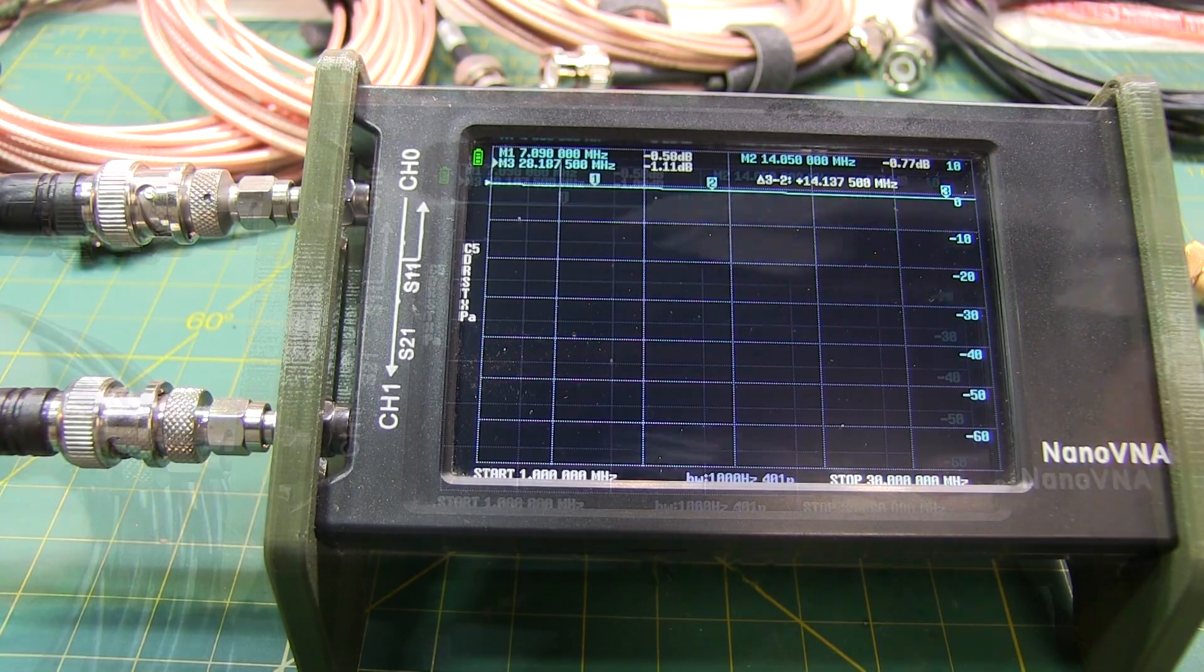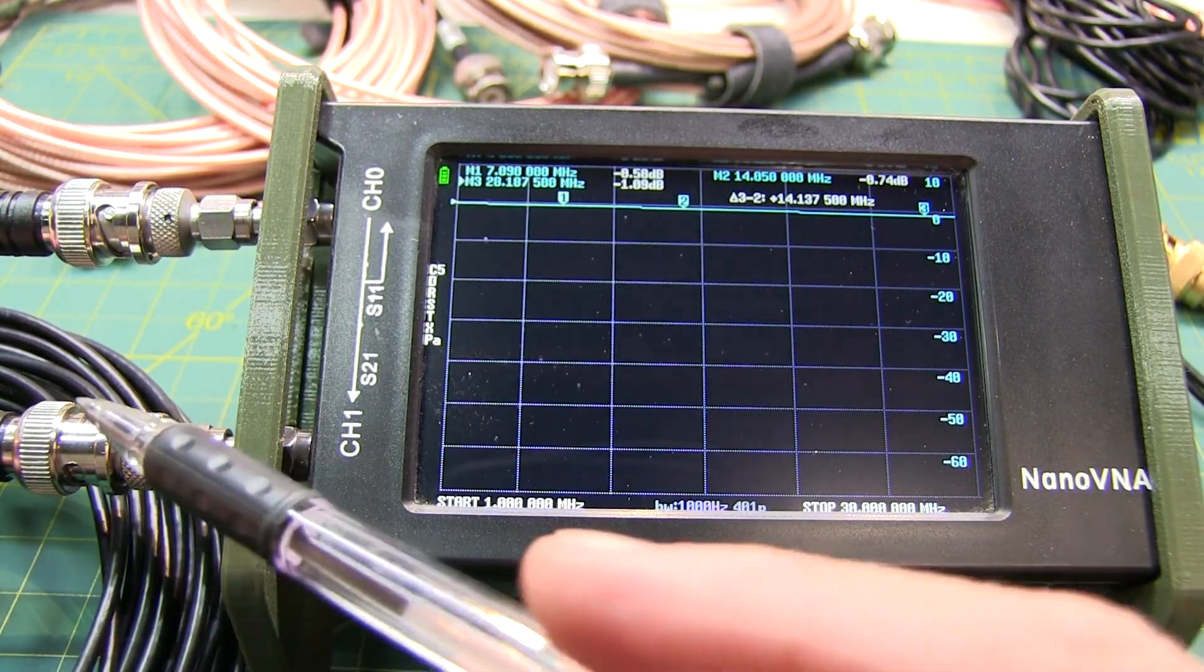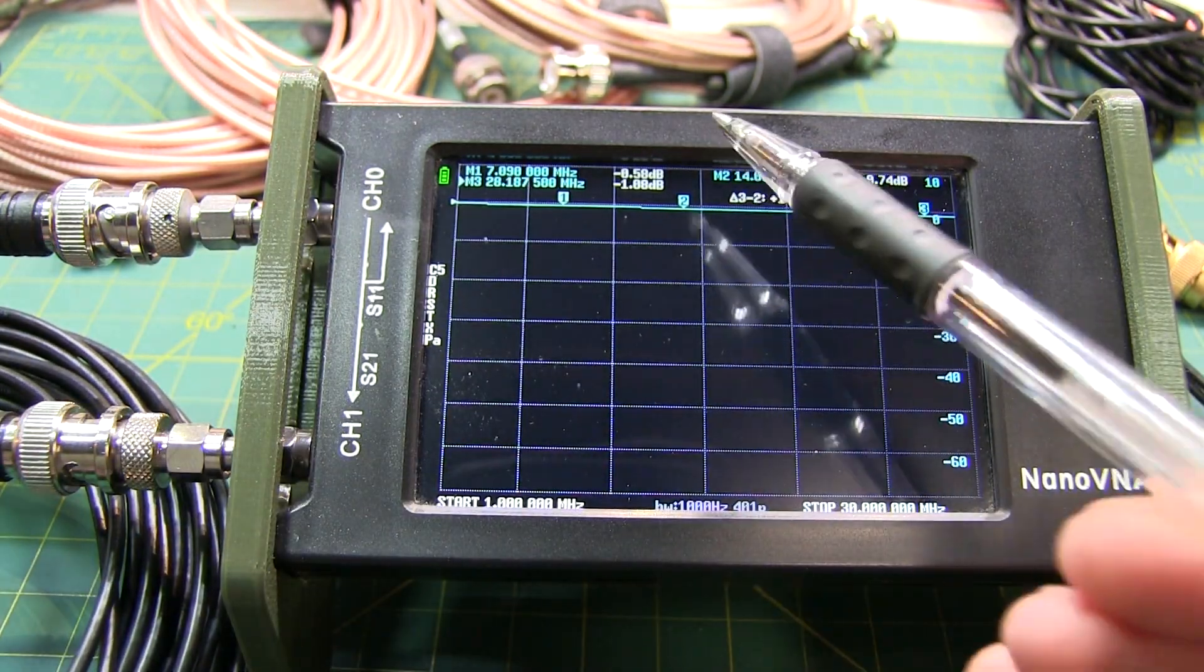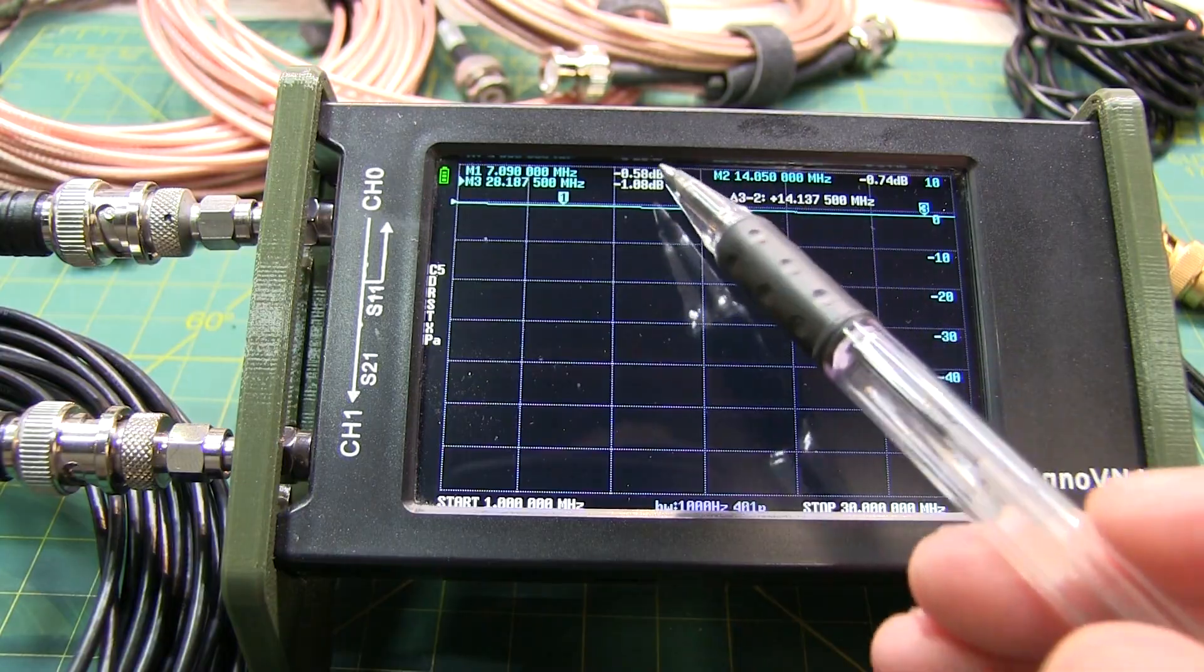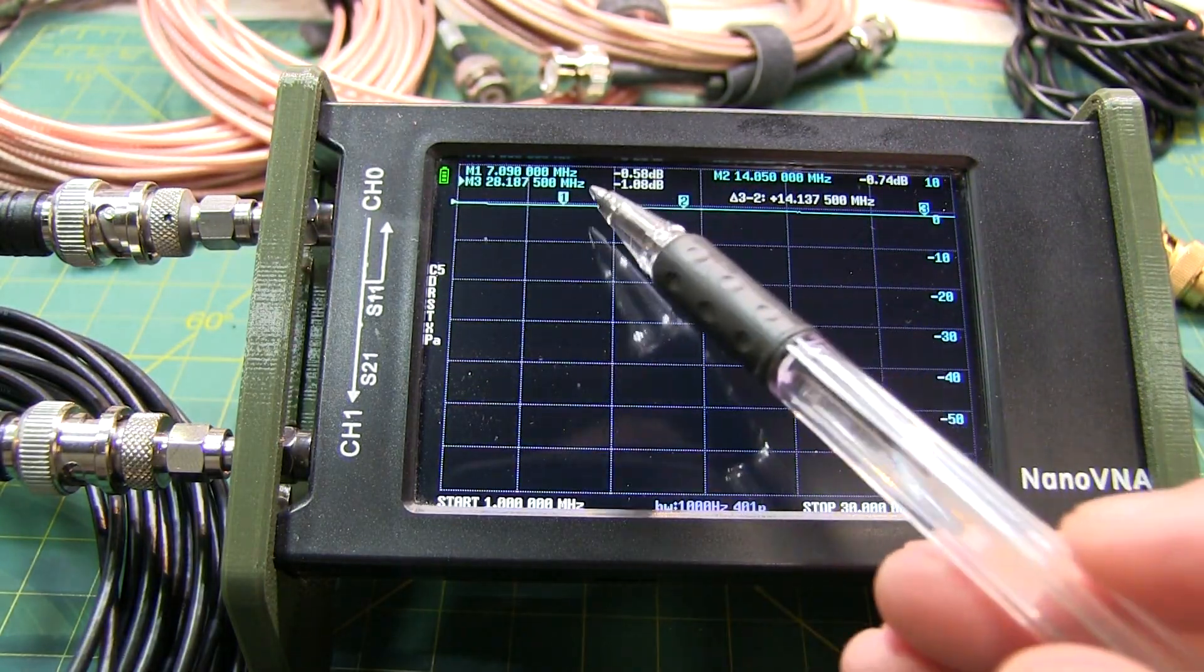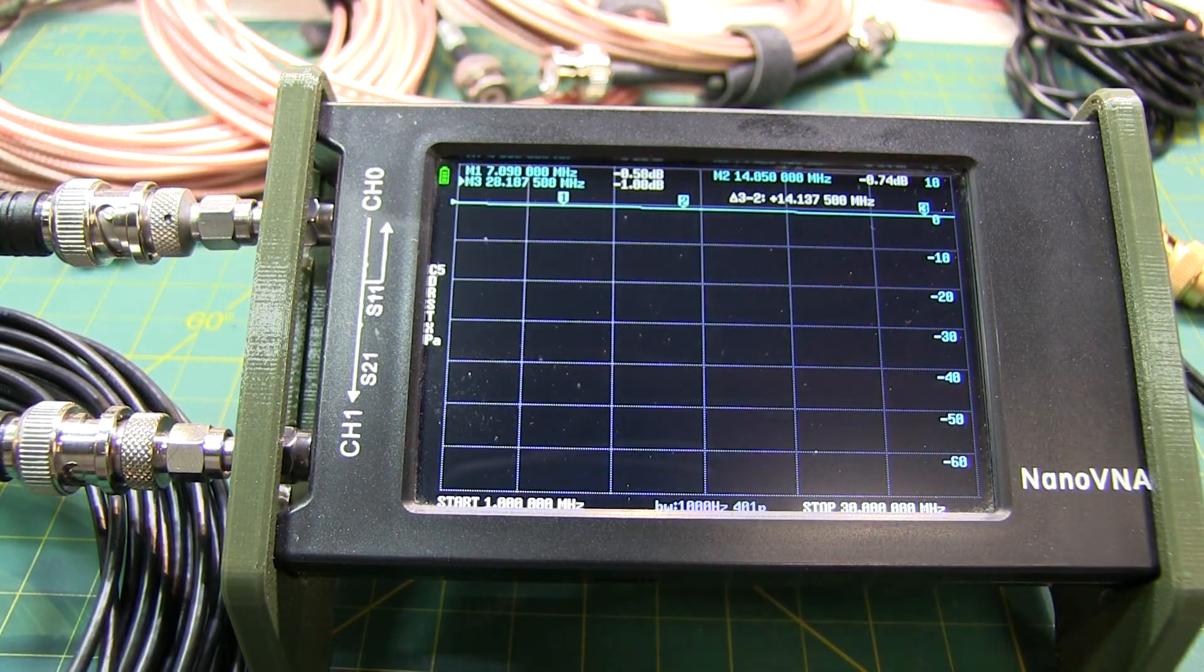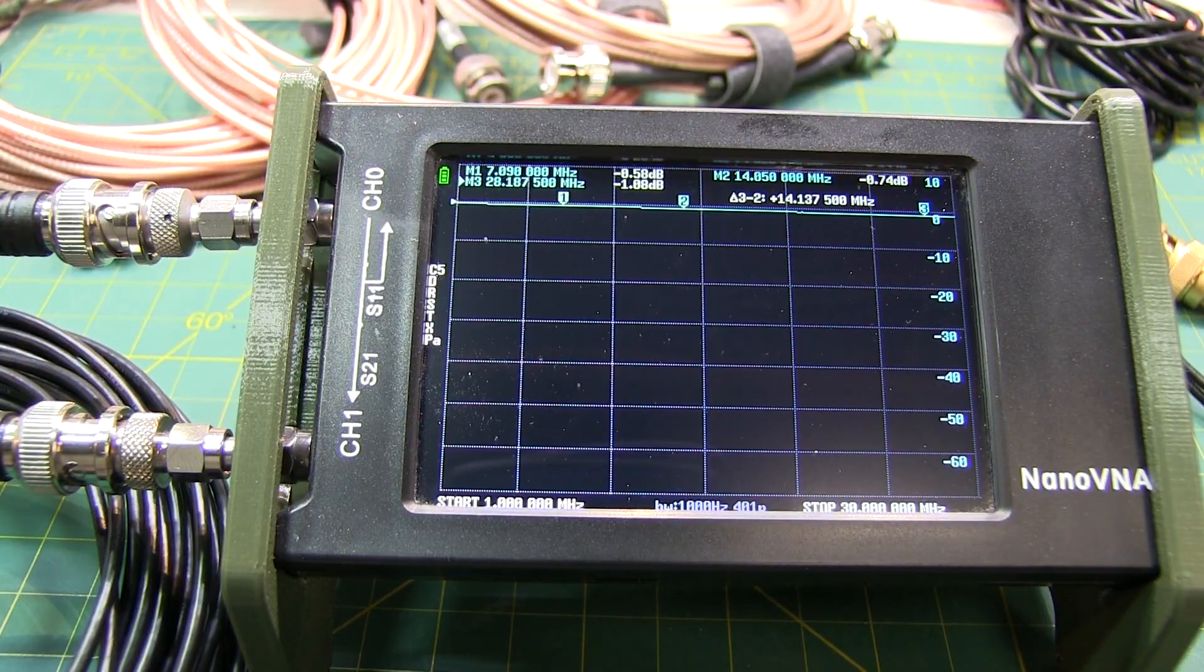Now next up, I've connected up my second example of a 25-foot length of RG-174, and it looks like the results are really similar. 0.58, 0.74, and 1.08. Very similar to the first 25-foot length of RG-174.